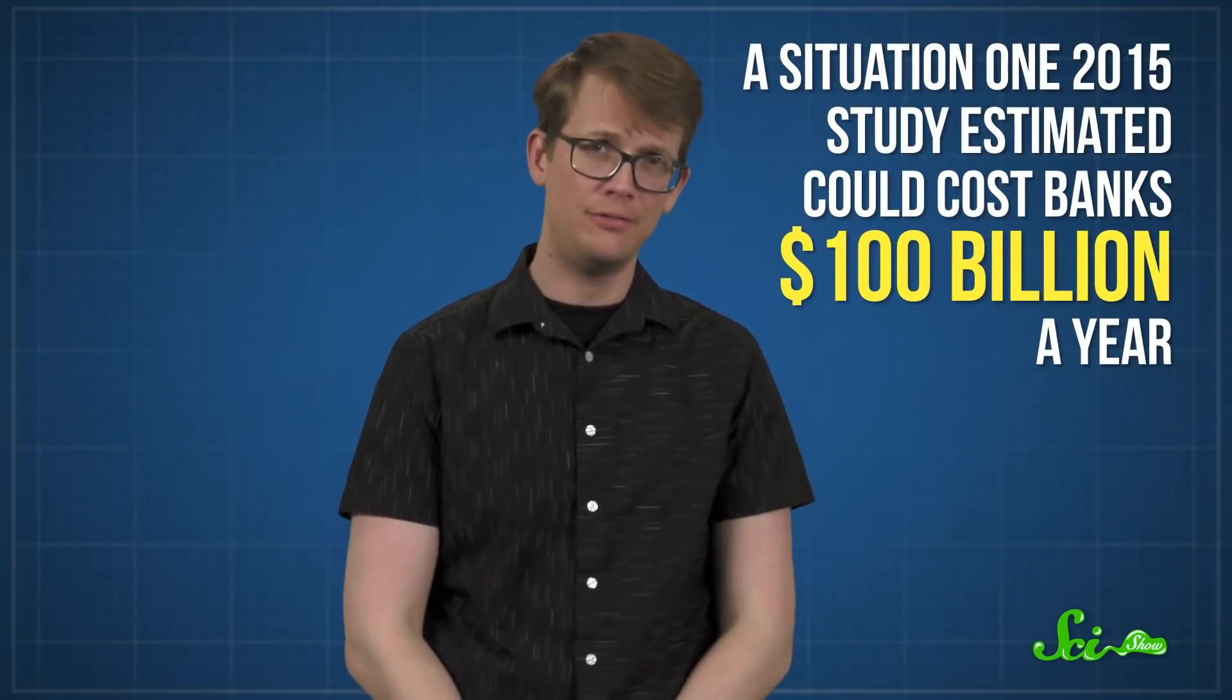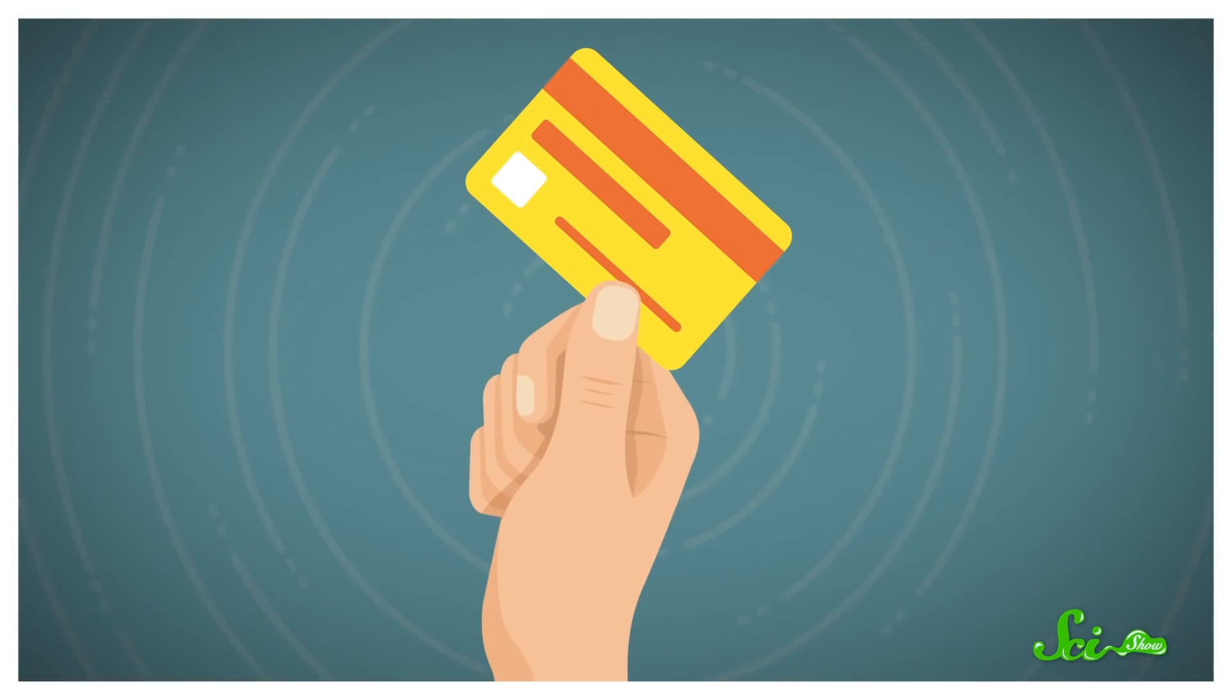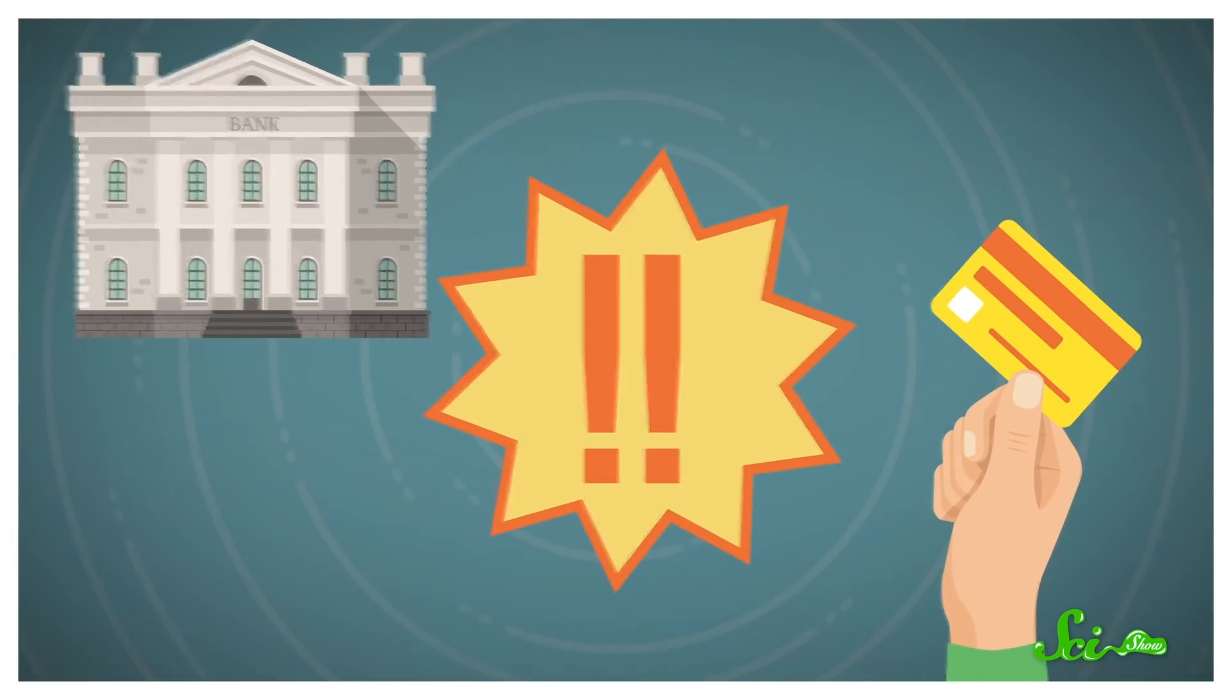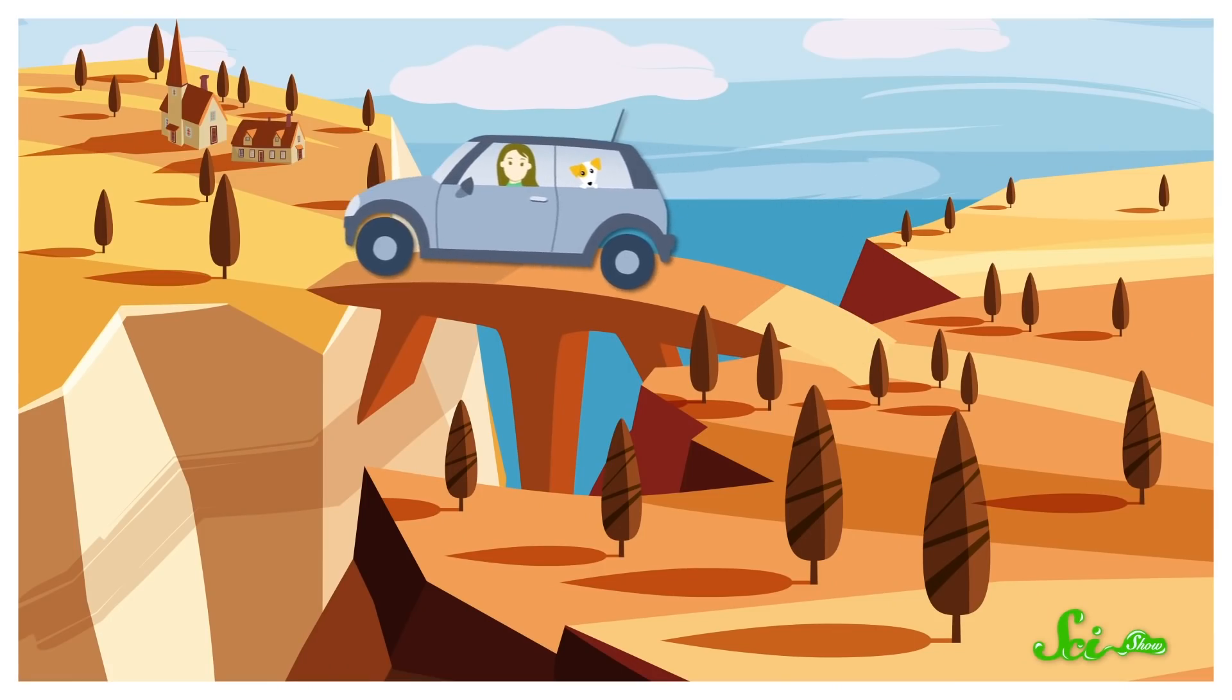A situation one 2015 study estimated could cost banks a hundred billion dollars a year. Part of the problem is that in the past, fraud detection has relied on a set of one-size-fits-all rules. Like, I'm going to make up a random example. They might decide that if you make a purchase in two different states within an hour, something's probably wrong. But maybe you were on a road trip, or you just live near the border. This very broad approach is kind of silly, especially since your bank knows an extraordinary amount about you, from how often you shop online to what stores you frequent and when you go.